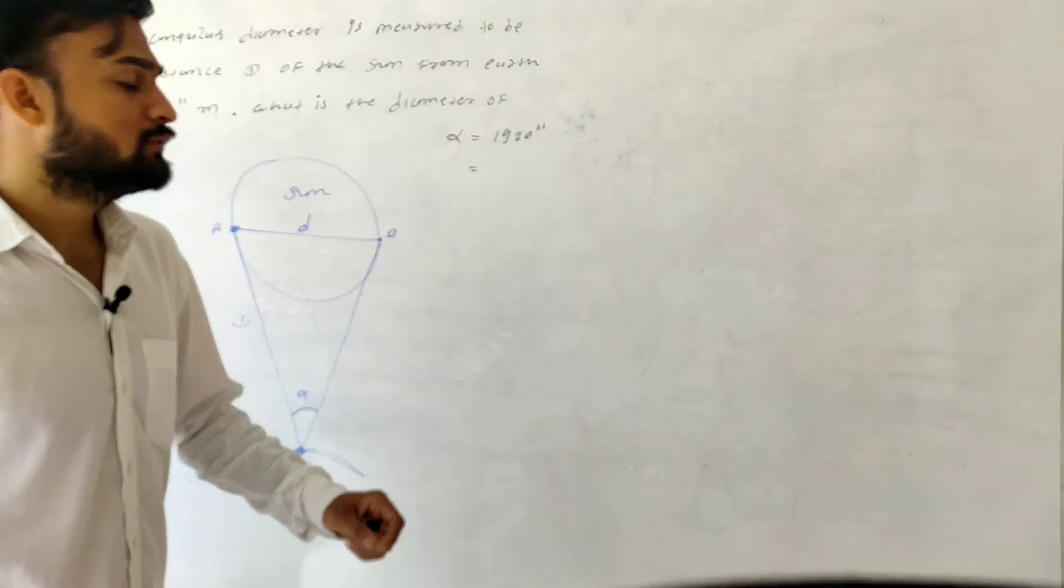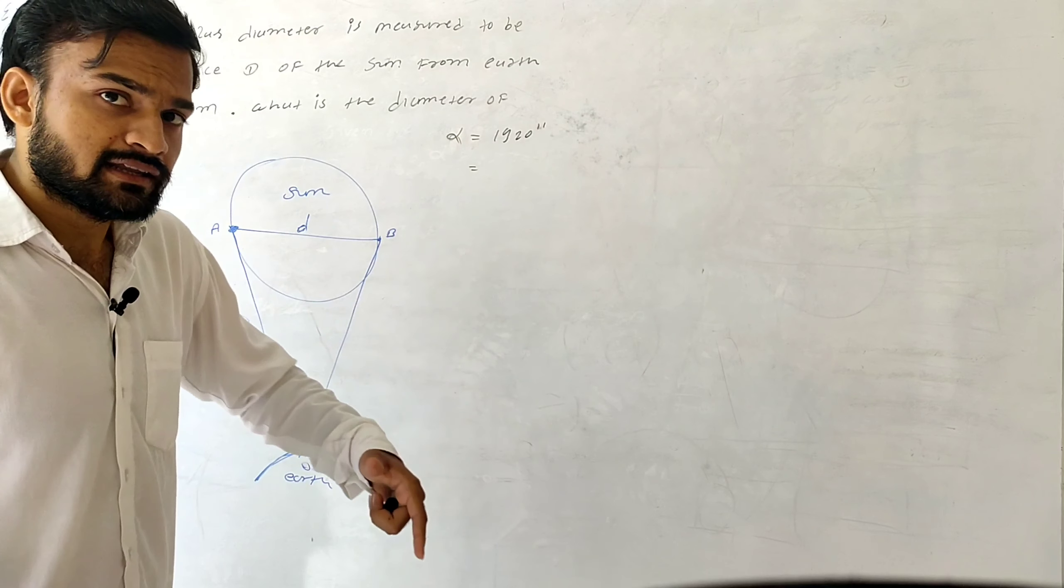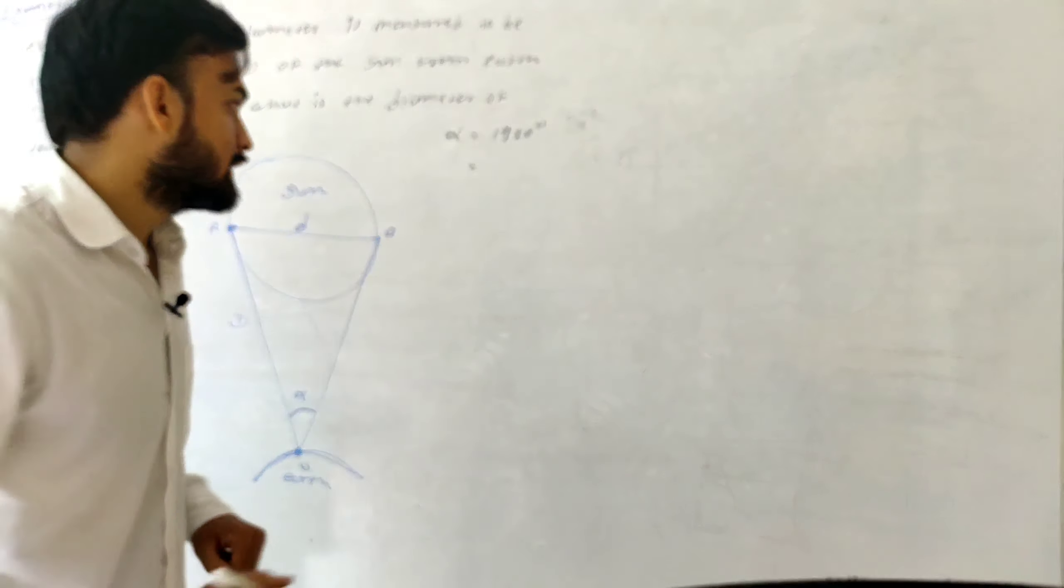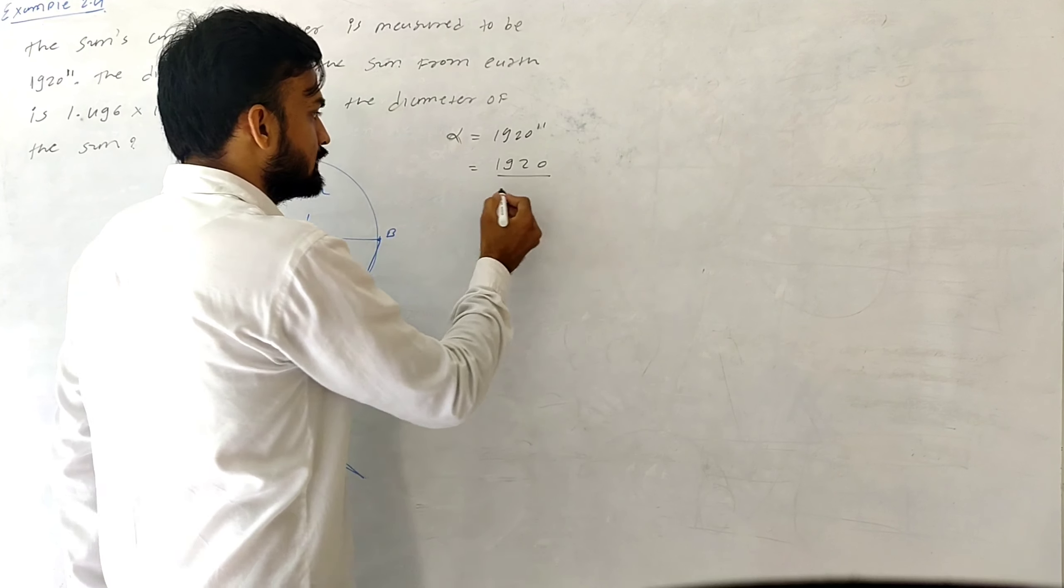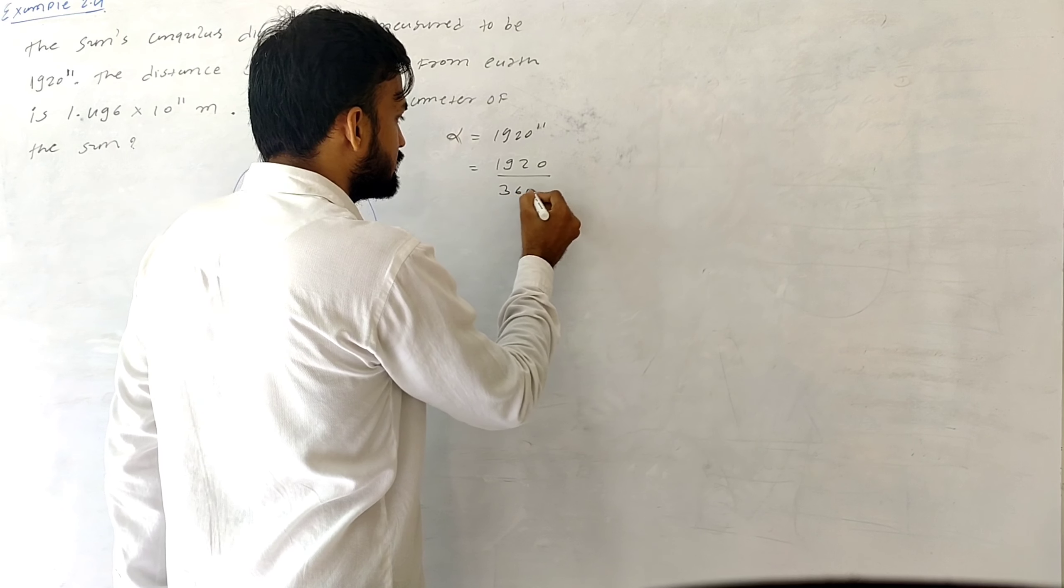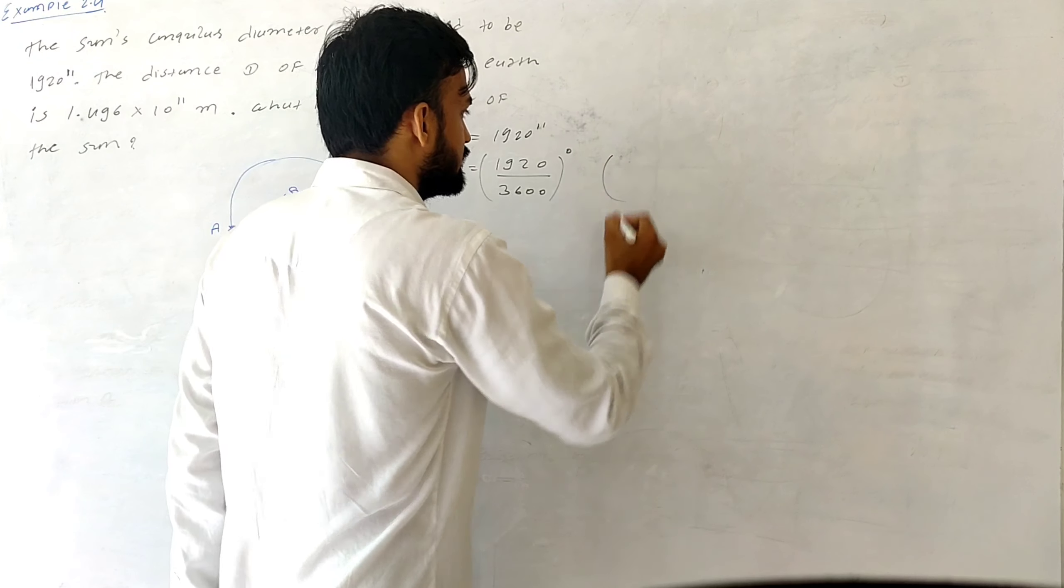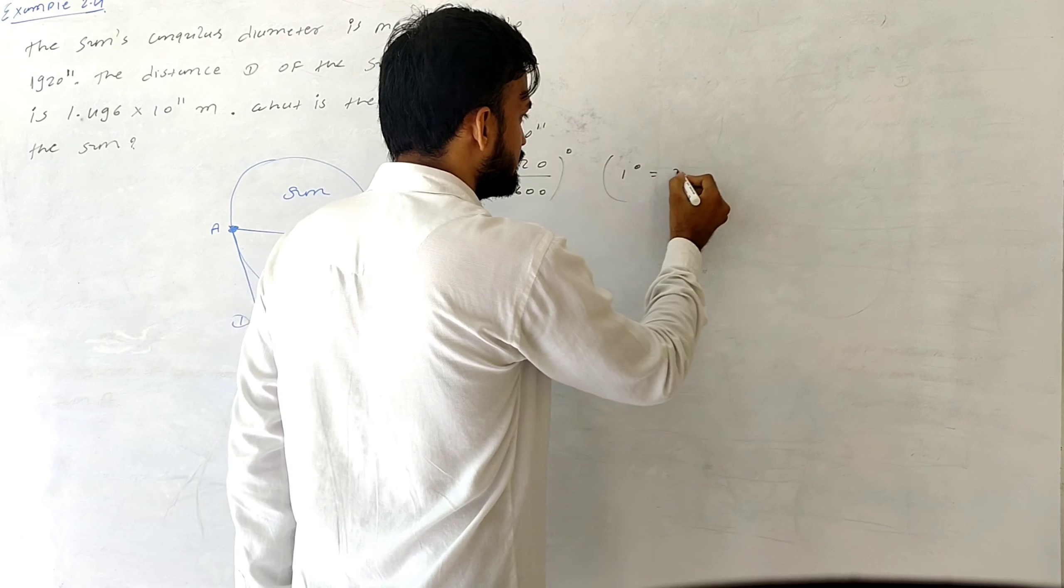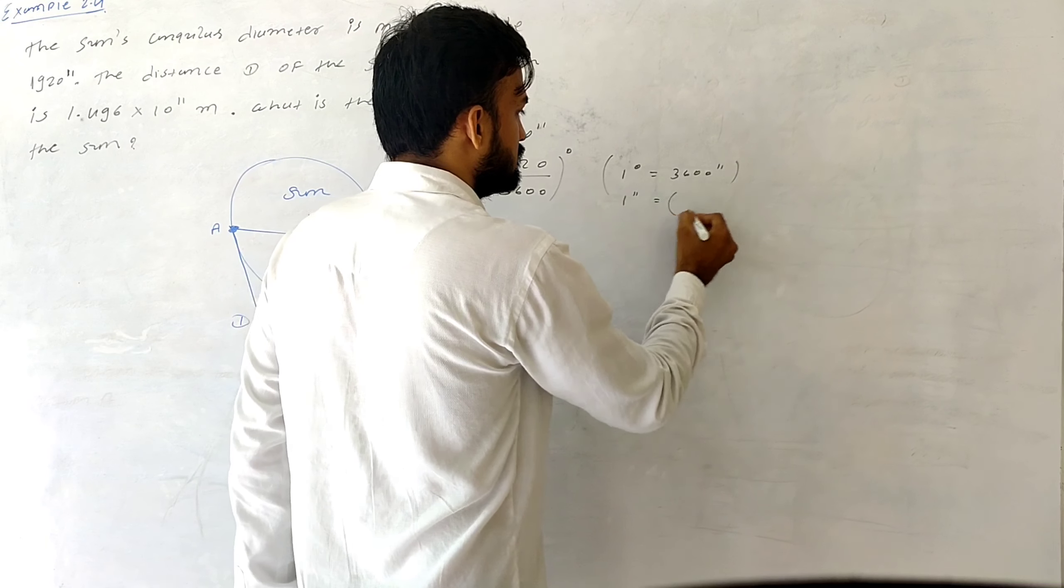We have to convert this 1920 seconds into degrees and then convert it into radians. To convert 1920 into degrees, we divide it by 3600. So now it is in degrees because we know that one degree is equal to 3600 seconds.